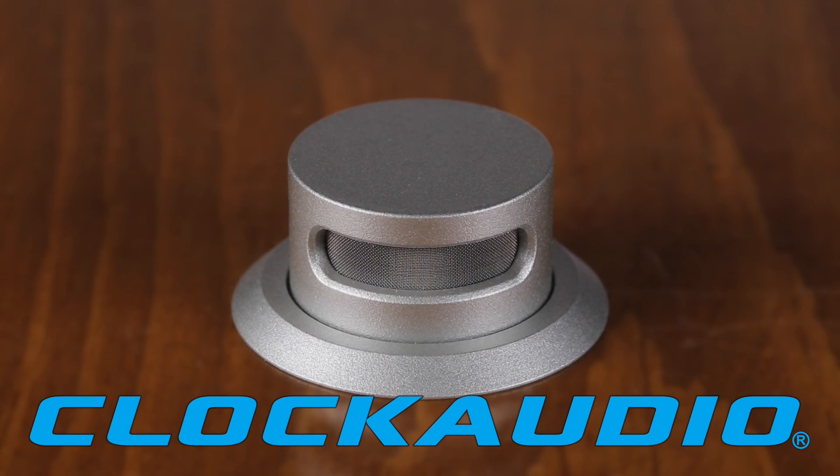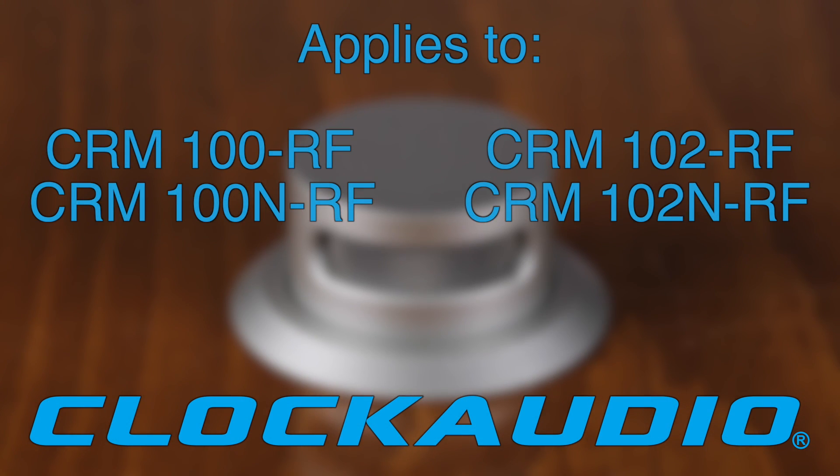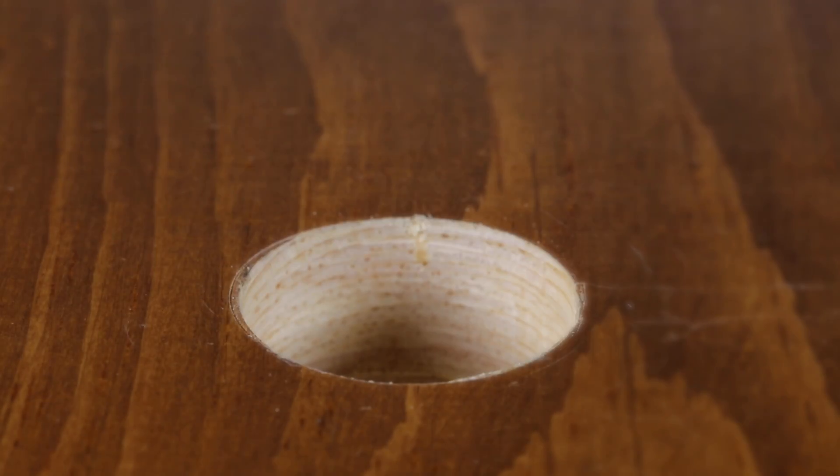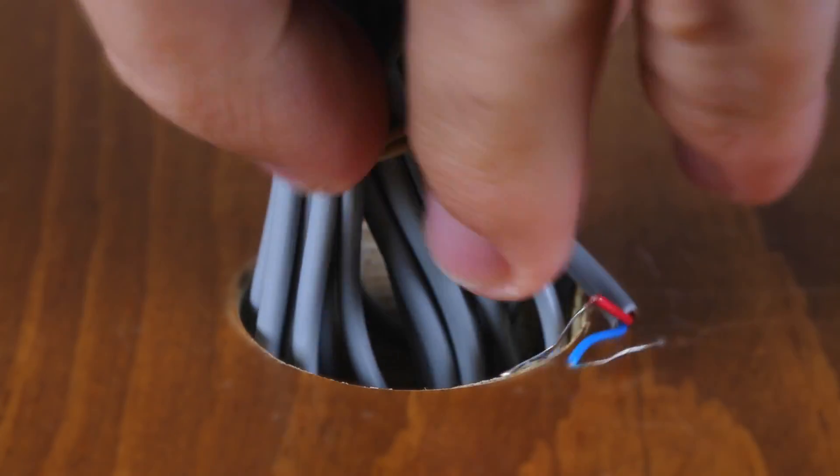This is the installation guide for the CRM102RF. Drill a 30 millimeter or 1.18 inch hole through the table.